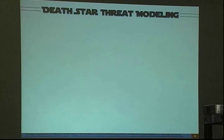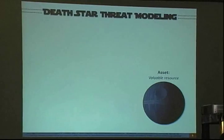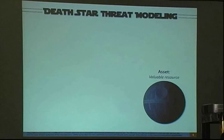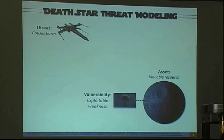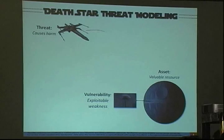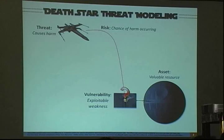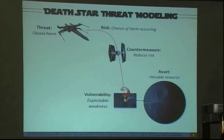These are the basics of Death Star Threat Modeling. First, you have your asset — that's a valuable resource, like your application, your website, the program you're coding. That asset has a vulnerability, which is an exploitable weakness — in this case, it's the exhaust port that somebody didn't put a screen over. Then there's a threat: the thing that's going to come in and try to exploit that vulnerability. The risk is the chance of that occurring — what's the chance of a proton torpedo going down the hole versus hitting the wall? And lastly, a countermeasure is something you put in place to reduce the risk.